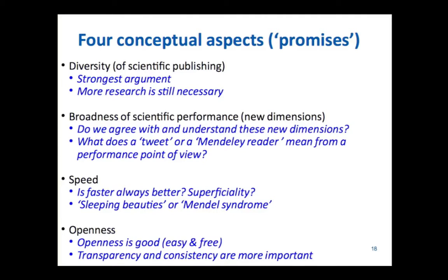On openness: it's good that data is easy, free, and accessible for everyone to check. But we also need transparency and consistency, which are perhaps even more important than openness. If we are going to evaluate scientists, programs, or universities, we need to know how the data is collected, and how clean and robust it is.